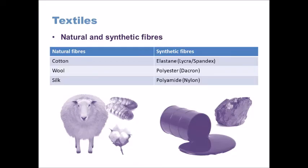Three examples that you might need to know about are cotton, wool, and silk. Cotton obviously comes from a cotton plant, wool comes from sheep or it could come from other animals like alpacas, and silk comes from the cocoons of a silk worm.